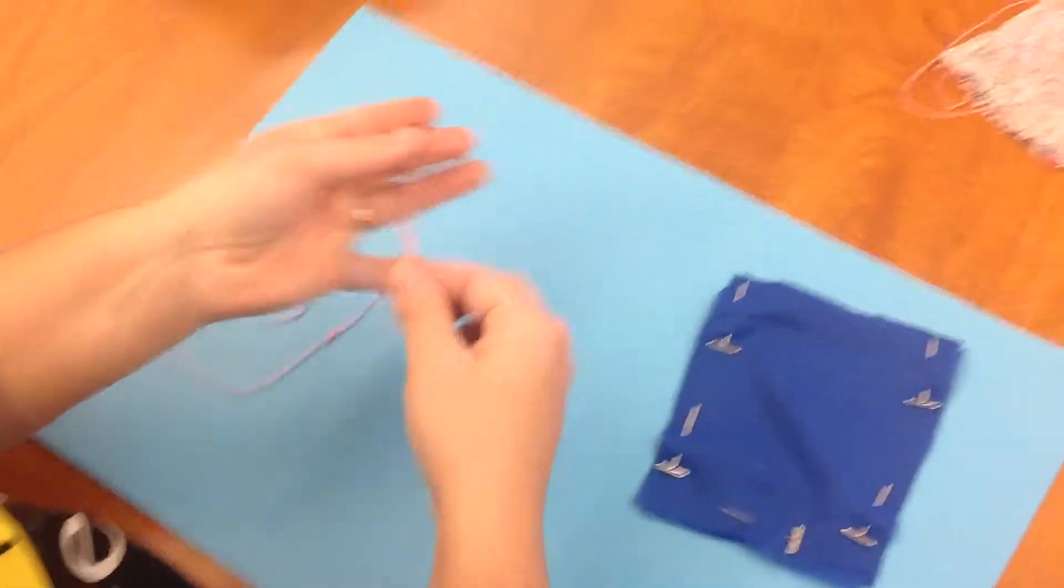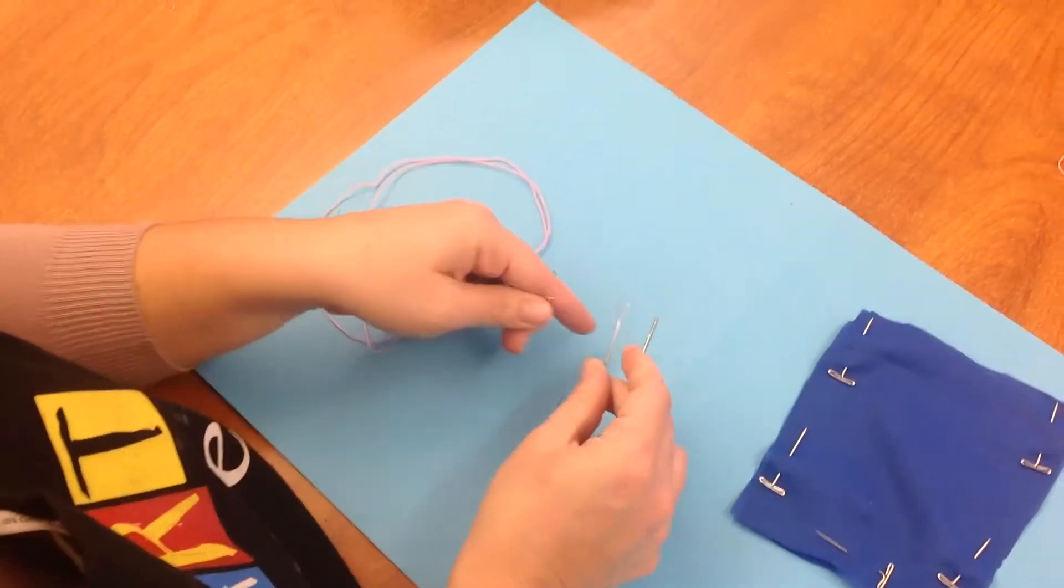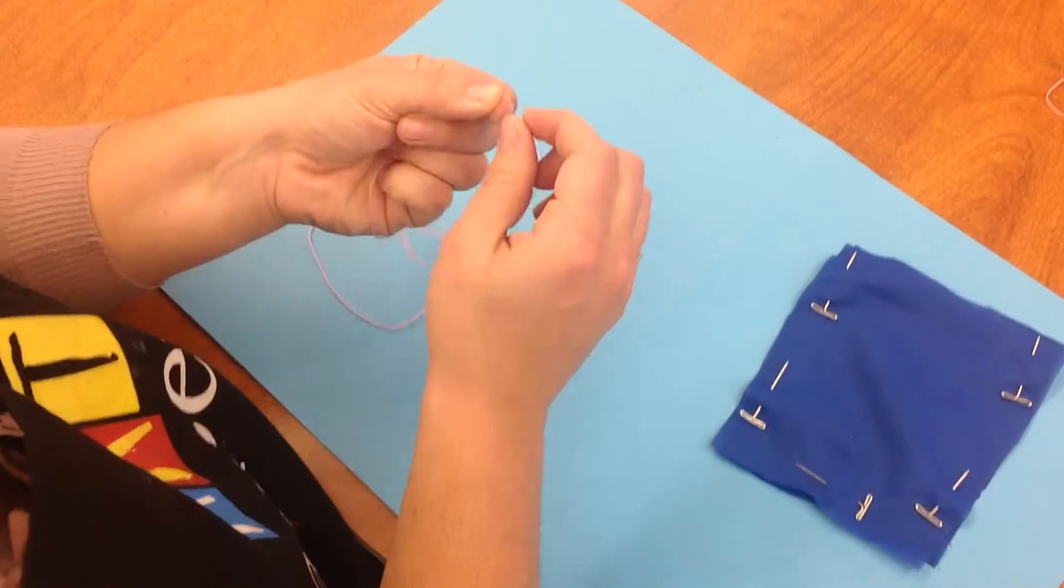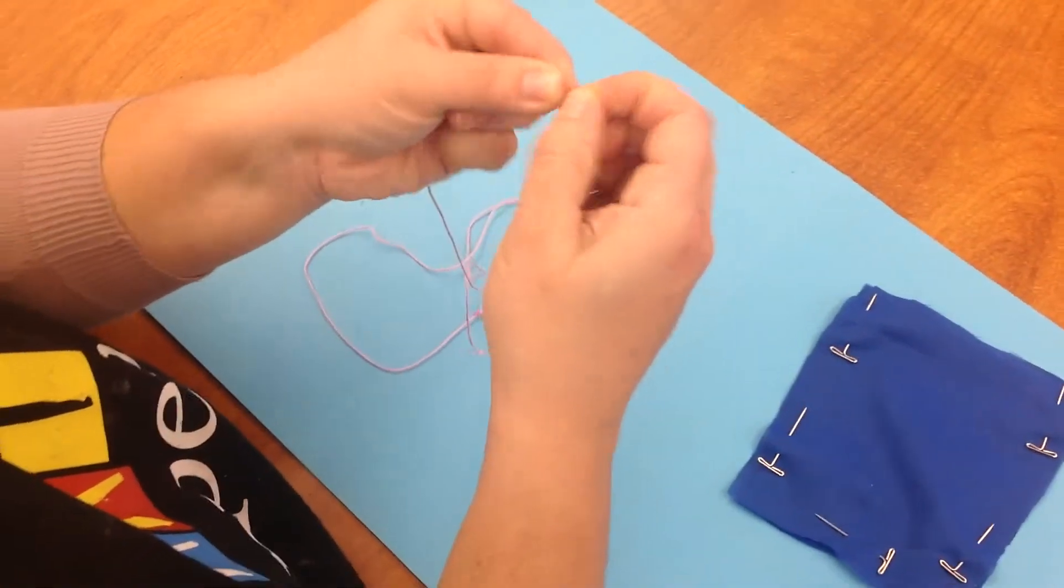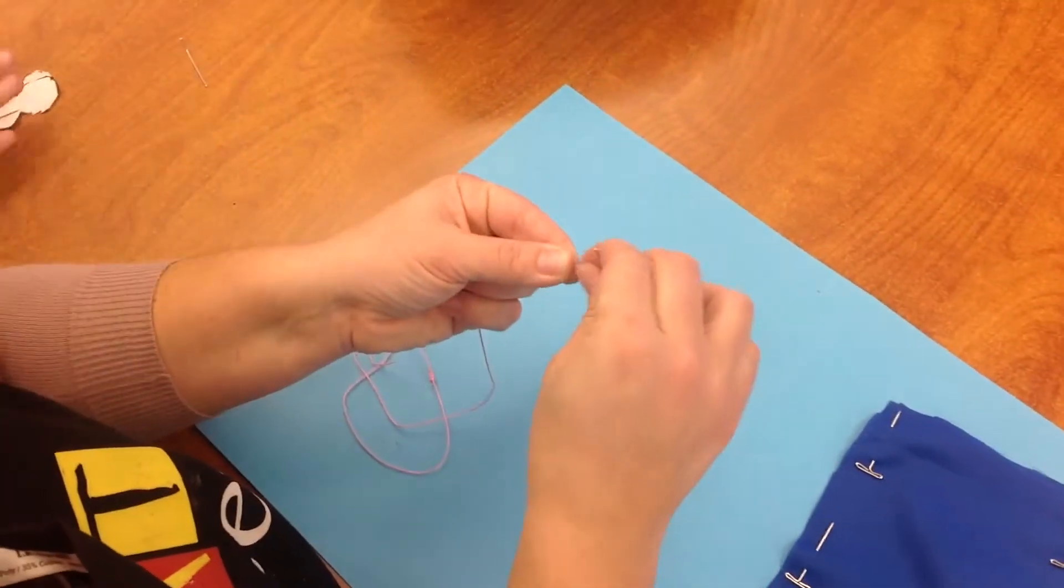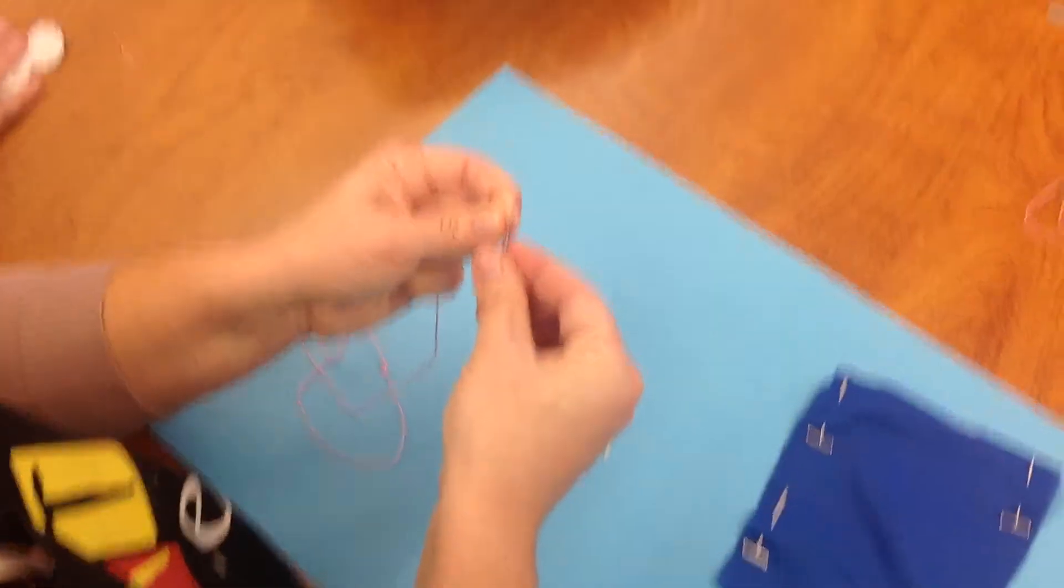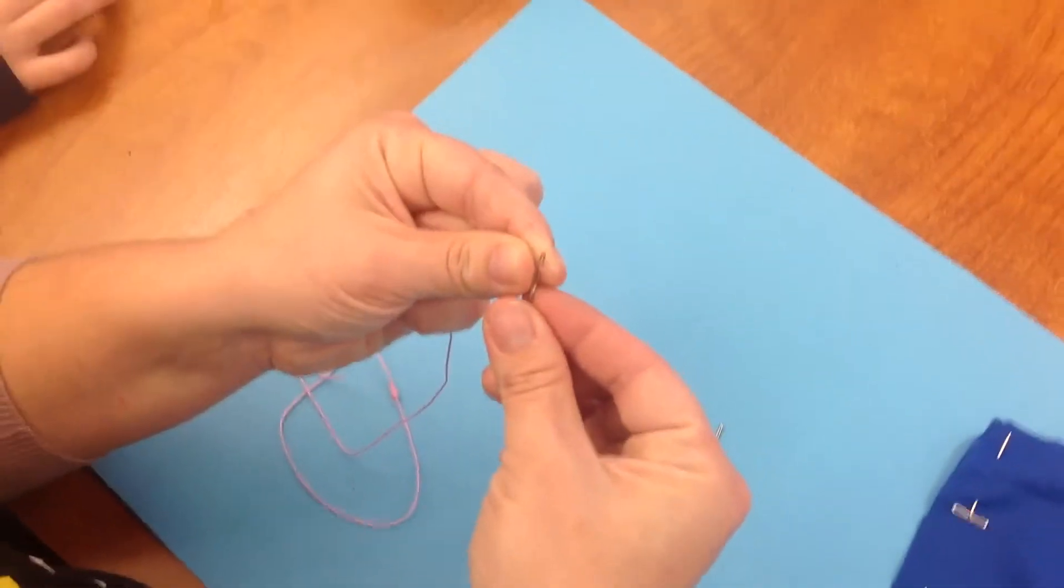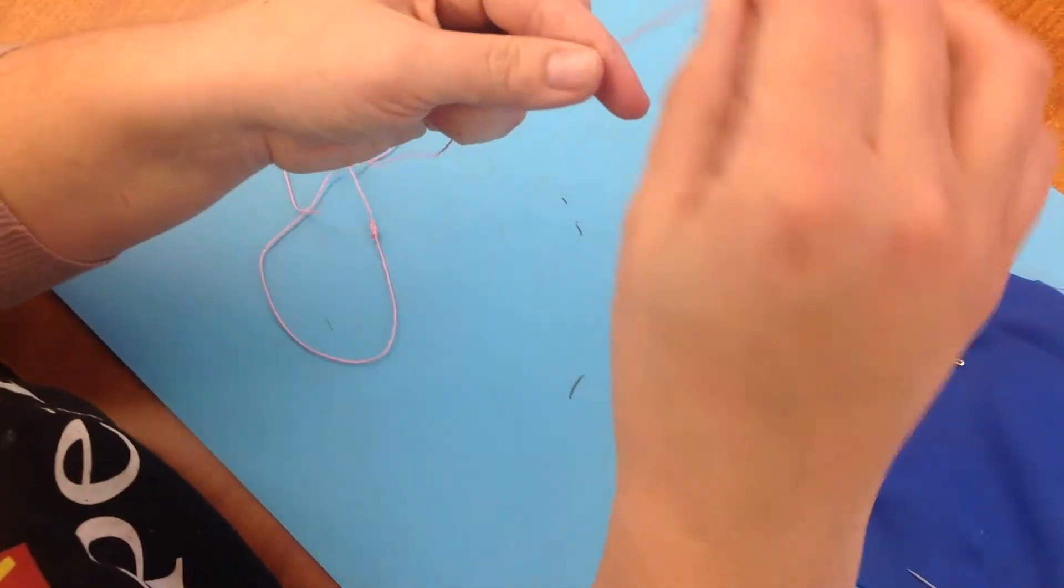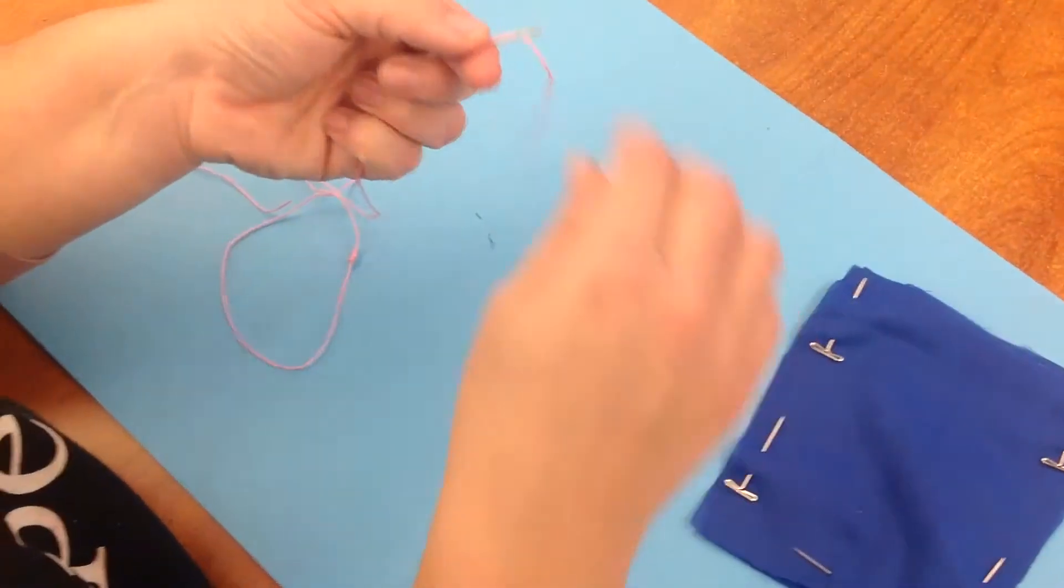To put the thread through the eye of the needle, you're going to want to twist the ends. The thread's made up of lots of little tiny hairs, so you want to twist it so it's not fuzzy. You may even want to wet it a little. Push the fuzzies through the eye, grab the ends. There it is. Slide it down.